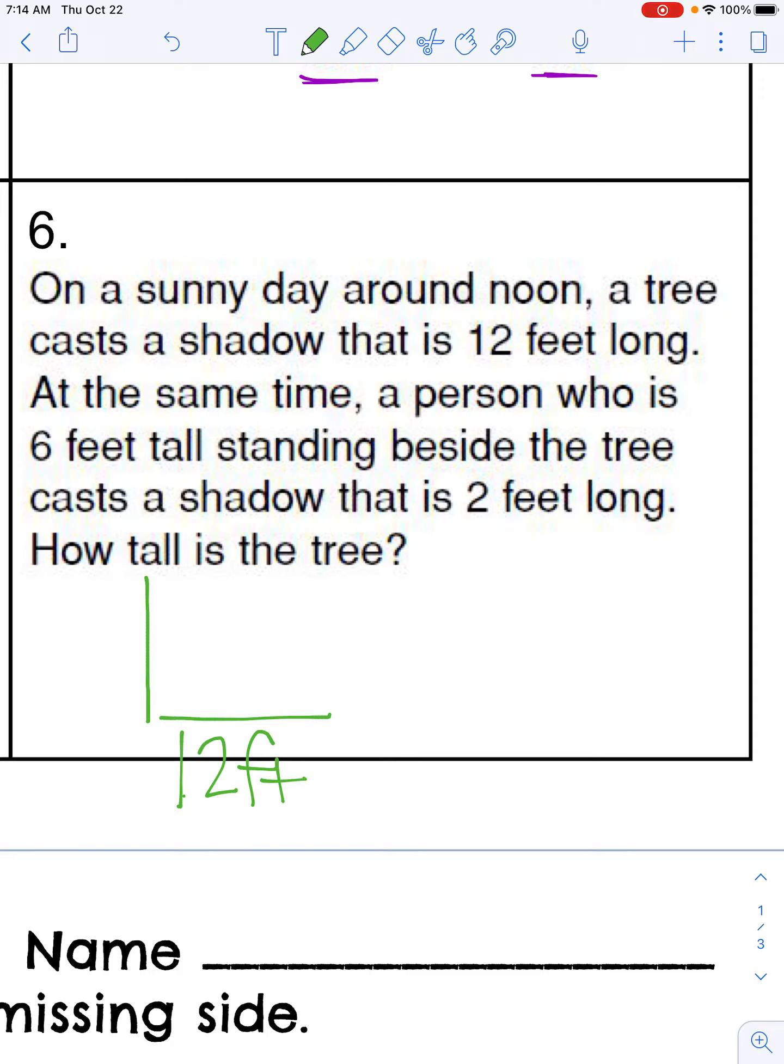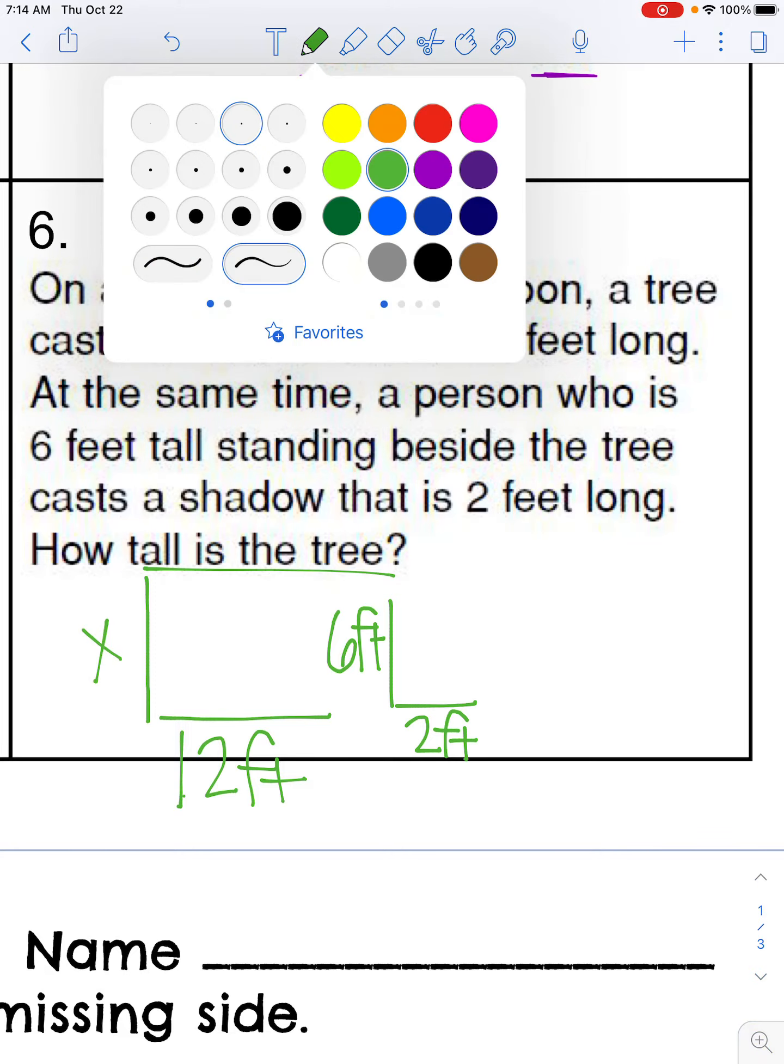And then we have a person who is six feet tall. So this will be six feet tall. And their shadow is going to be two feet. And we're looking for how tall is the tree. So how tall is our tree is our X value that we're looking for.